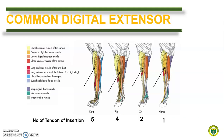The common digital extensor is a strong muscle with several tendinous intersections. The tendon of insertion is split according to the number of functional digits in the different species. Thus, we can compare them based on the number of tendons of insertion: there are five in dogs, four in pigs, two in ruminants, and one in horse.